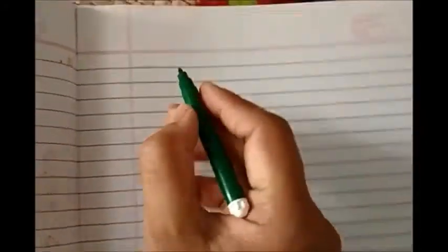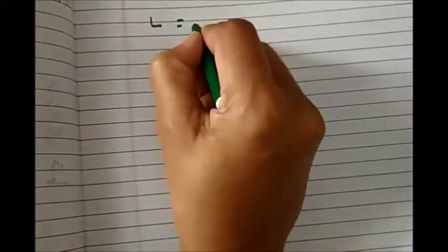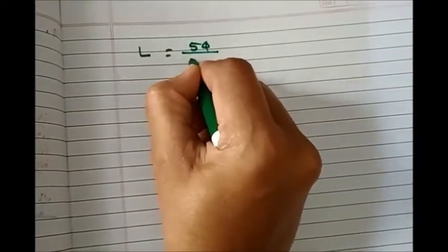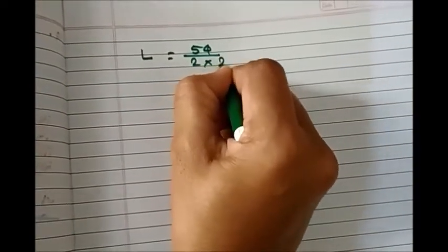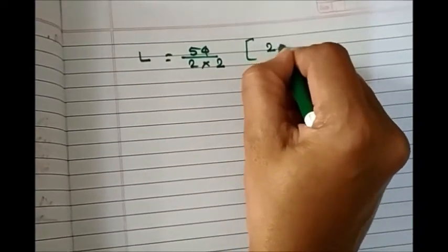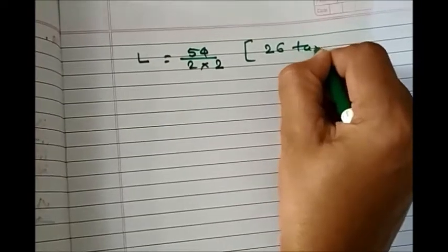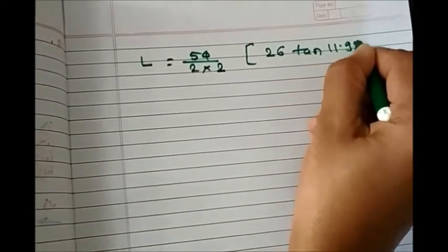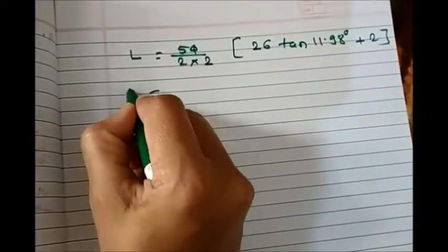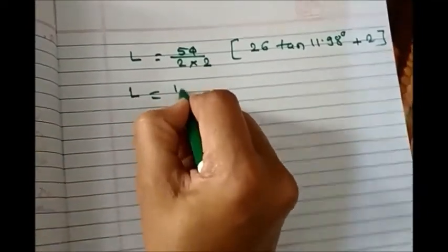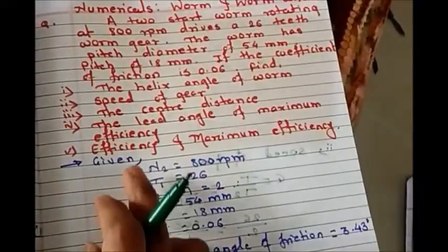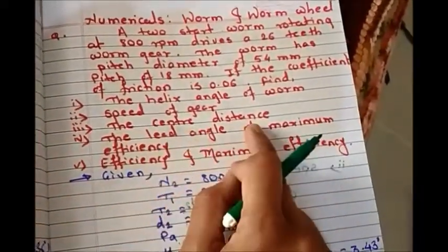So it is diameter 54 divided by 2 into 2, inside the bracket number of teeth of the gear is 26, tan of 11.98 degrees plus 2. Number of teeth of worm is 2. So we get L equals 101.47 mm. So here we finish the center distance.